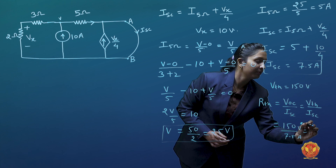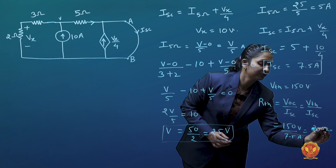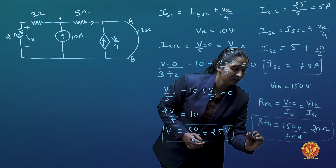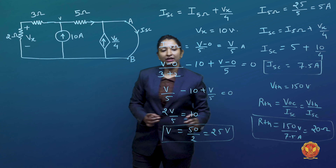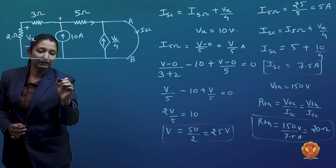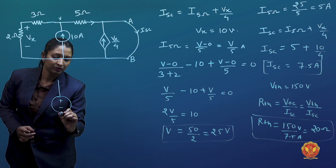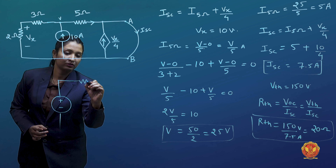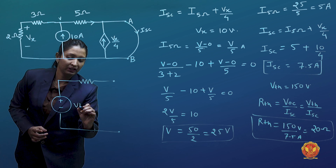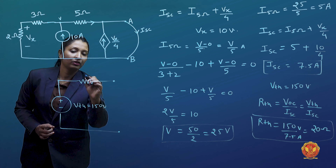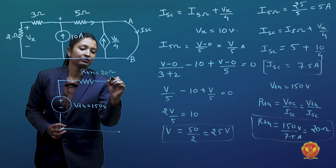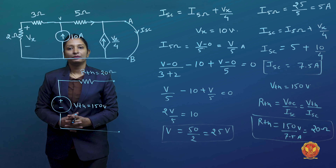RTH equals open circuit voltage divided by short circuit current, which is 150 volts divided by 7.5 amperes, giving RTH equal to 20 ohms. Drawing the Thevenin's equivalent circuit across terminals A and B: we have Vth equal to 150 volts in series with RTH equal to 20 ohms.